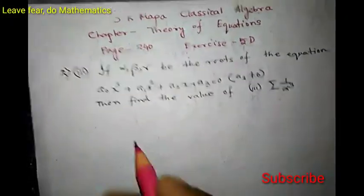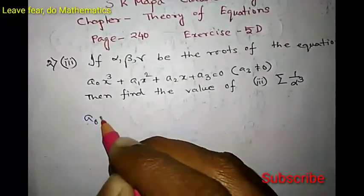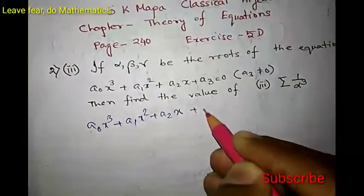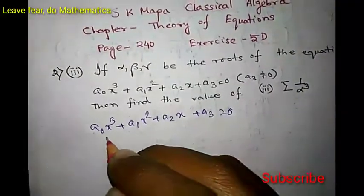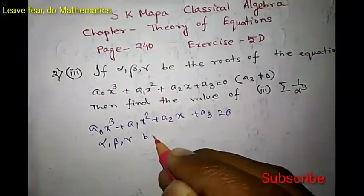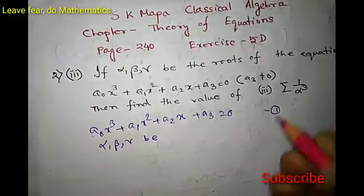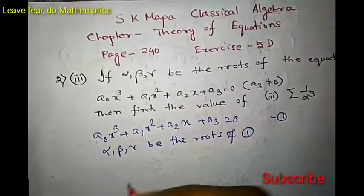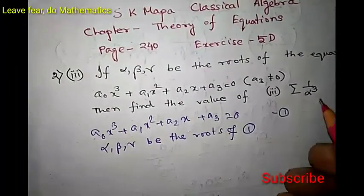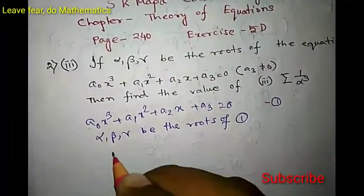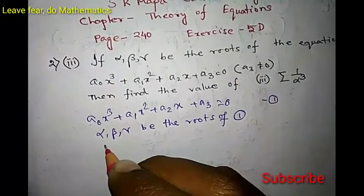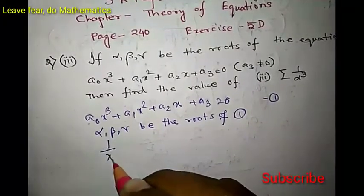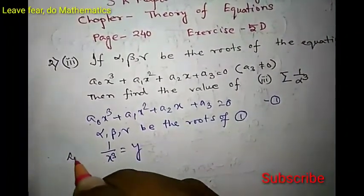We have our equation as a₀x³ + a₁x² + a₂x + a₃ = 0, where alpha, beta, gamma are the roots. We have to find the equation whose roots are 1/α³, 1/β³, and 1/γ³. So let us put 1/x³ = y.